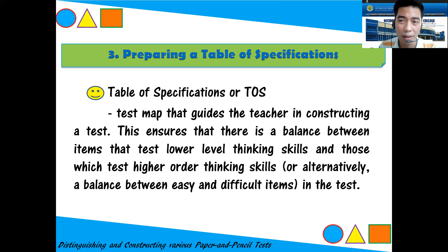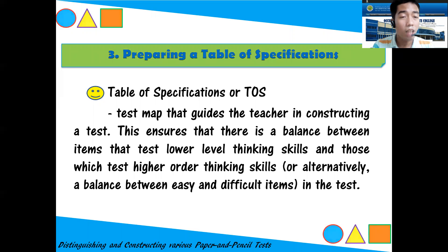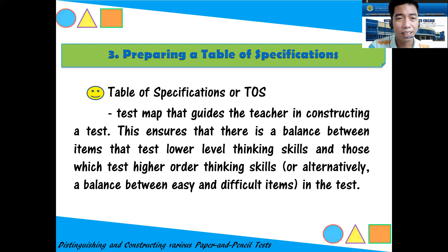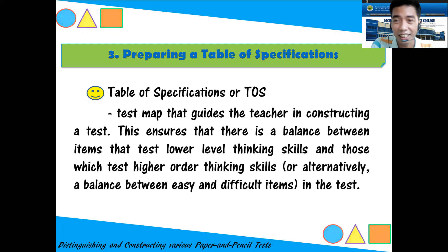The TOS ensures that if 50 items are from lower-level thinking skills, 50 items should come from higher-order thinking skills. Similarly, the number of items per topic should reflect the time spent teaching that topic. If you taught one topic for two hours but gave only three items, and another topic for one hour but gave ten items, that is not balanced. What I am discussing is the ideal practice — in the real field you may not always follow it perfectly, but this is the standard to aim for.